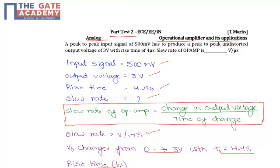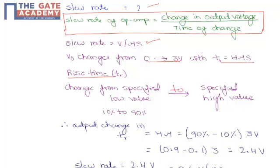Rise time is defined as change from the specified low value to the specified high value, denoted by TR. The rise time denotes the change time of the output from 10 percent to 90 percent.